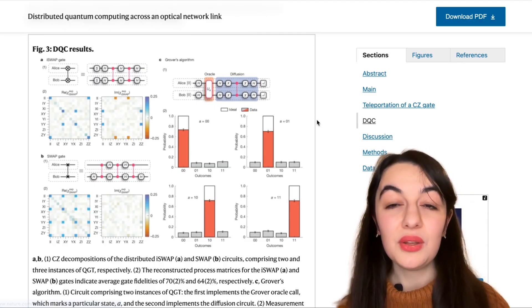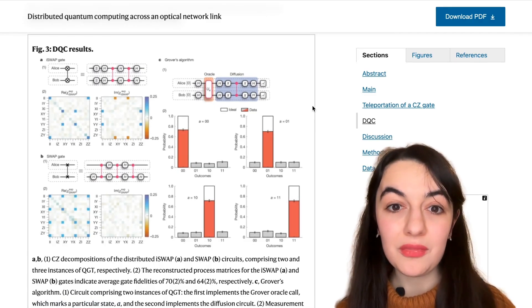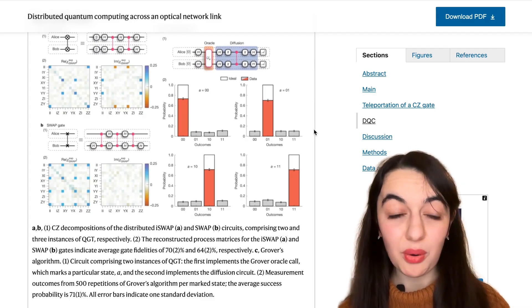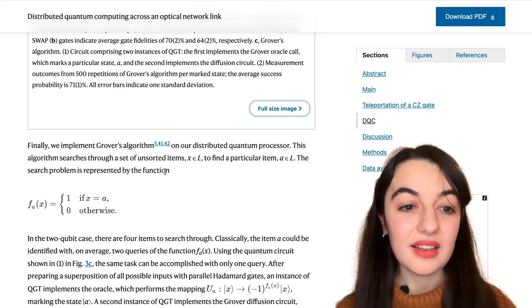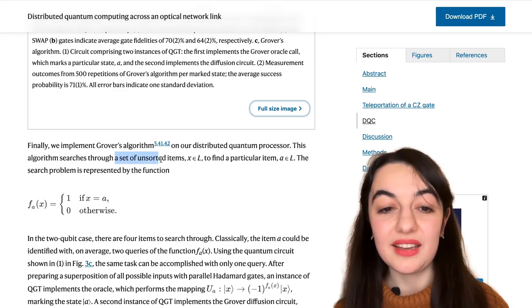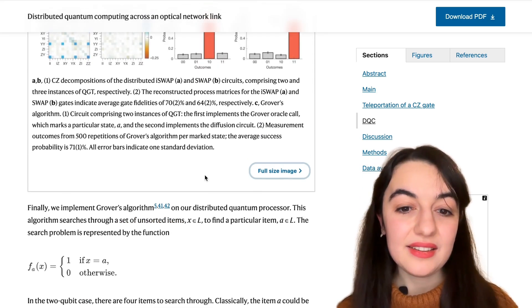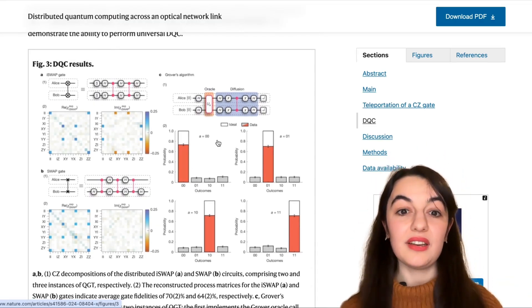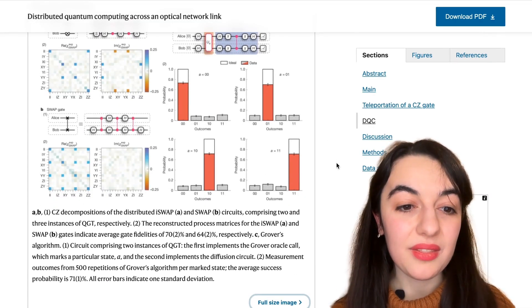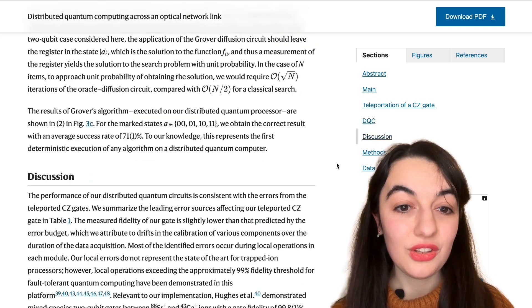So here they demonstrated Grover's algorithm, which is a well-known quantum algorithm for a particular problem. It's called Grover's search. It's to do with finding an item in a list. And they did this kind of using these different locations with the trapped ion qubits.